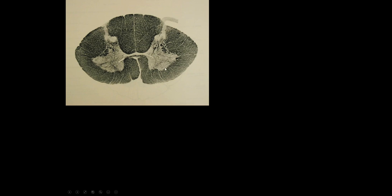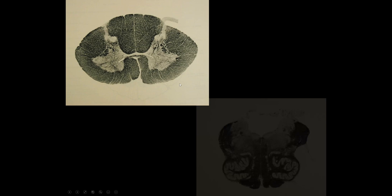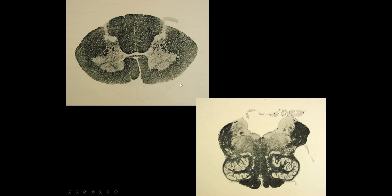We can see the roots coming out from anterior horn cells from the ventral horn. As we move up into the medulla, these anterior horn cells become lower motor neurons in the brainstem. The brainstem is just the rostral continuation of the spinal cord. For example, here is the hypoglossal nucleus, and we can follow the hypoglossal nerve going out to the tongue. These are just like anterior horn cells, but now they're in the brainstem.